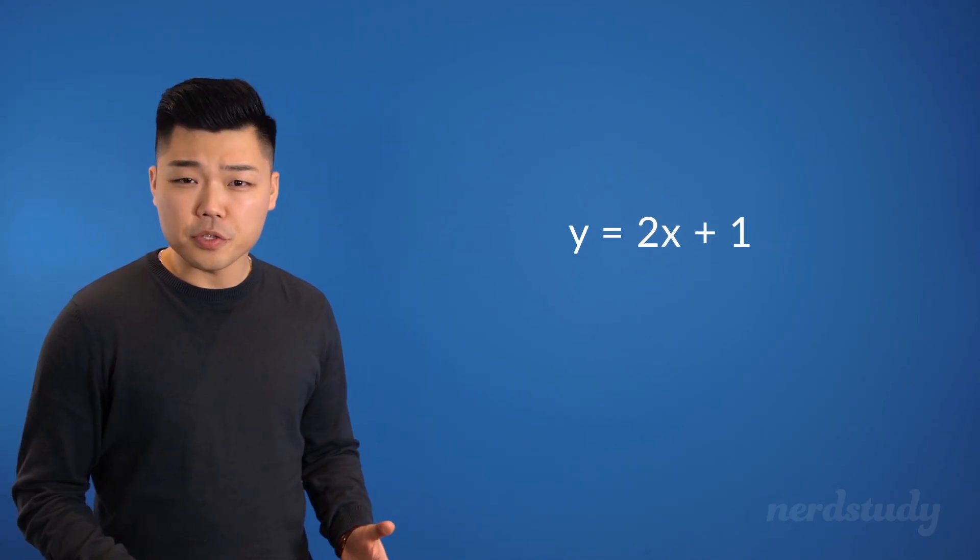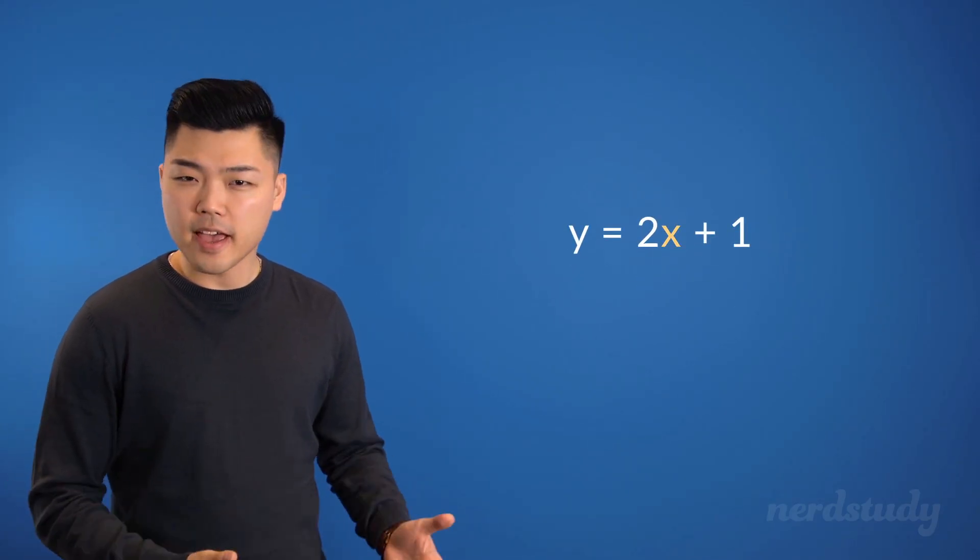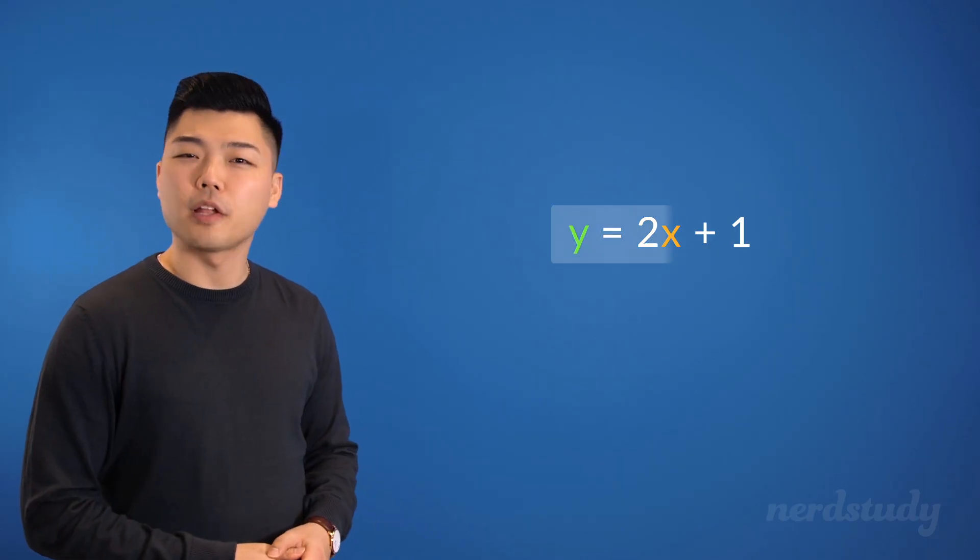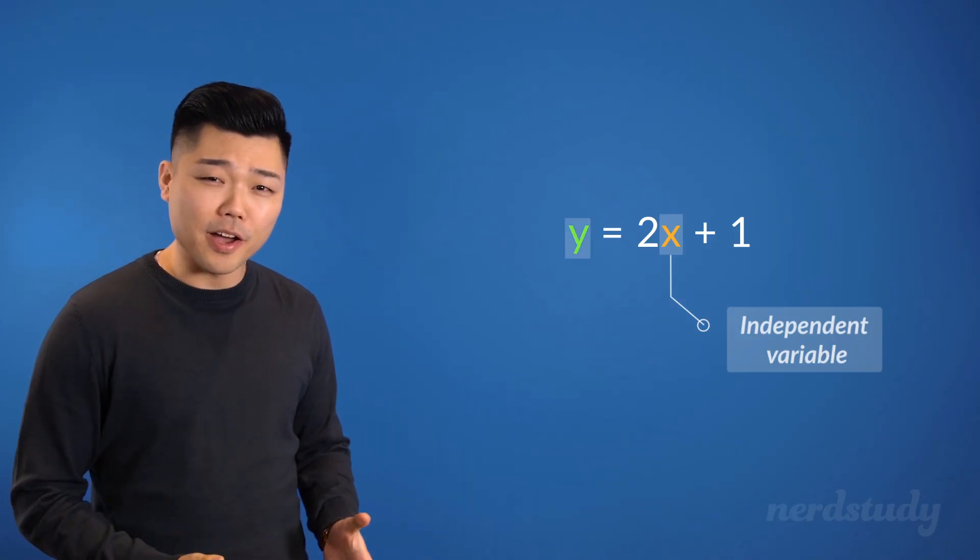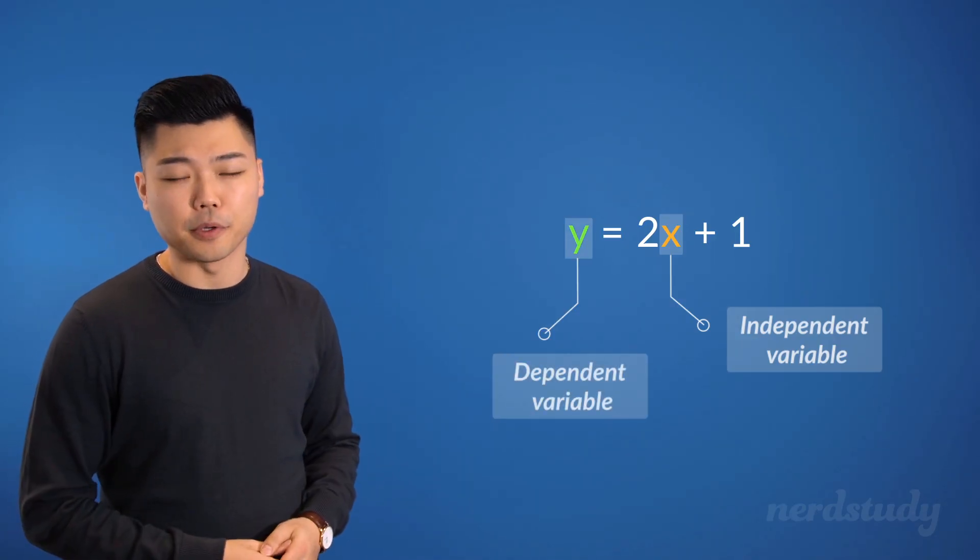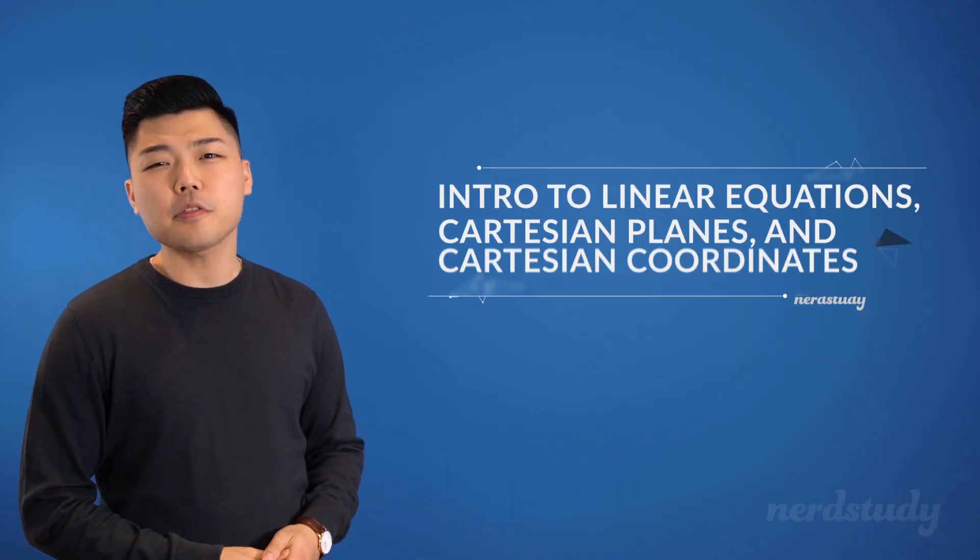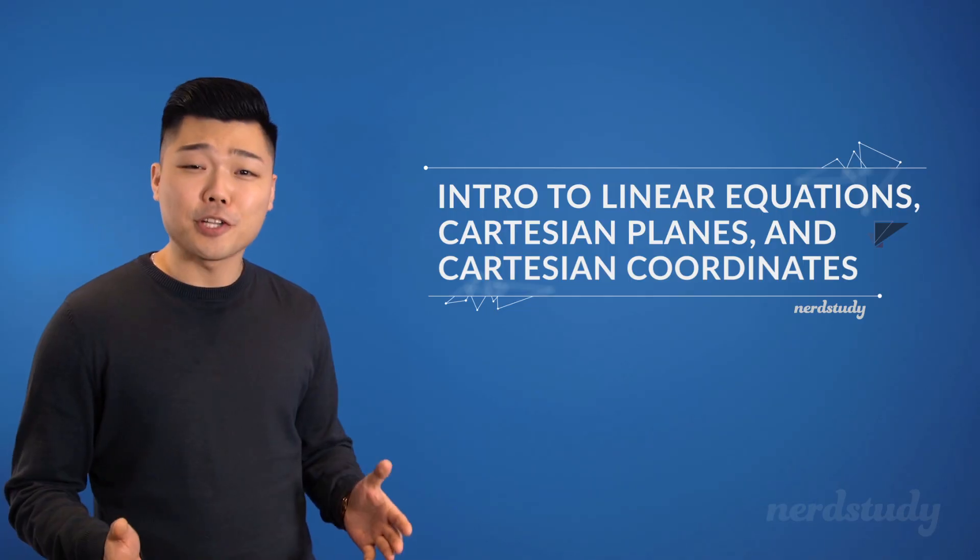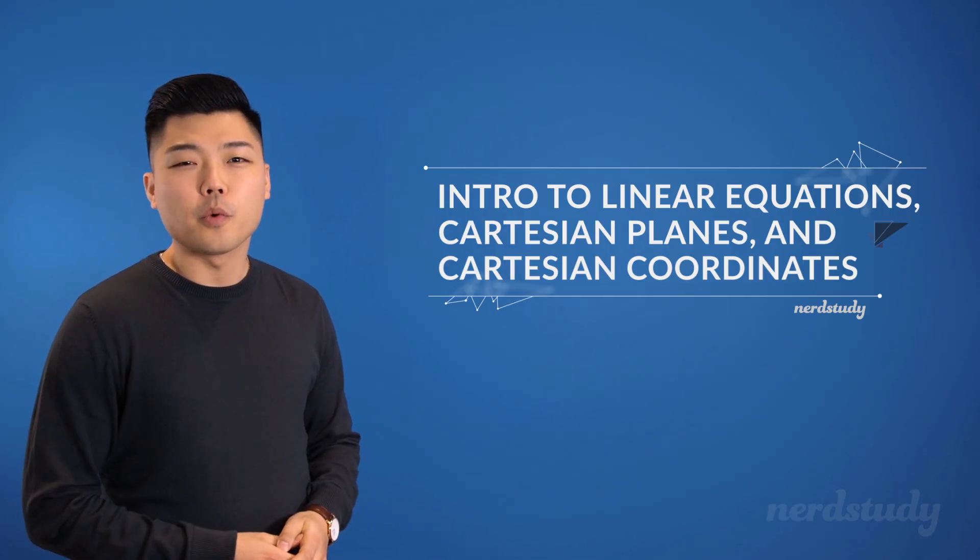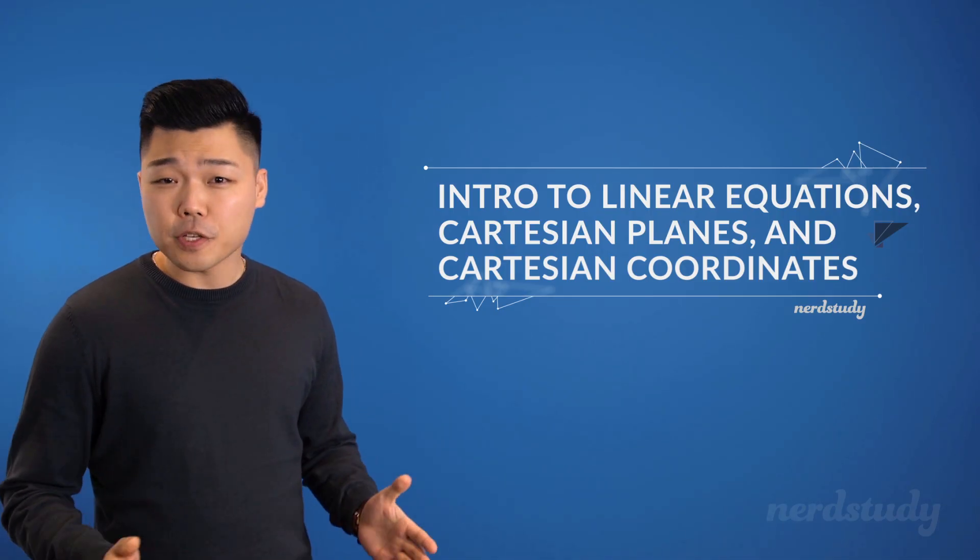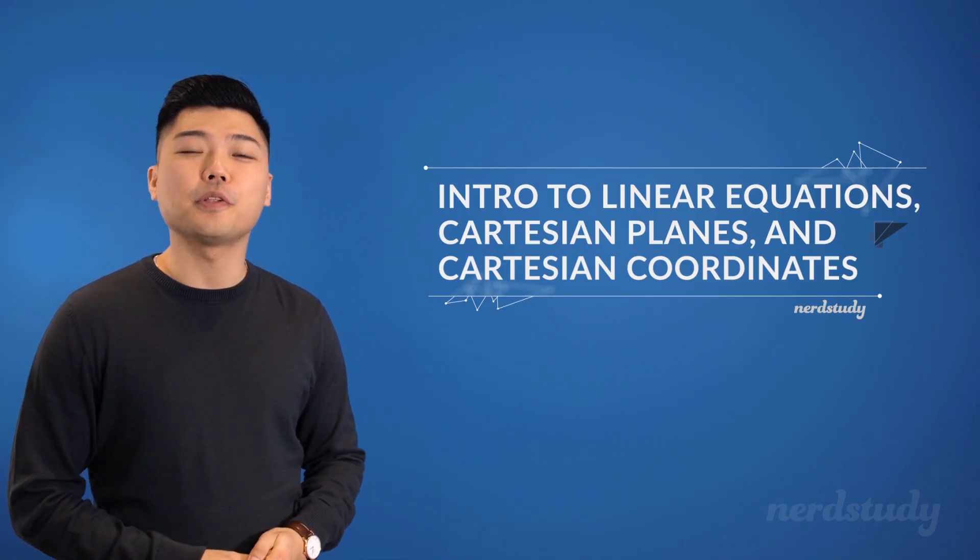In our Independent Variables and Dependent Variables lesson, we learned that with an equation that has the variables x and y in it, like this, the x in it is the independent variable, and the y is the dependent variable. In this video, however, we are going to learn about how the equations relate to charts, Cartesian planes, and Cartesian coordinates. What's more is that we'll get our first glimpse into how these topics are related to each other.